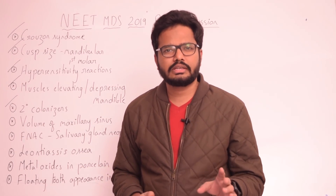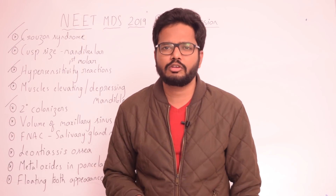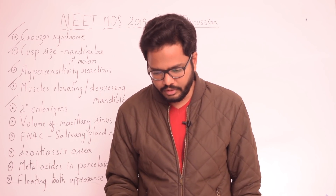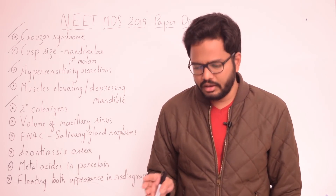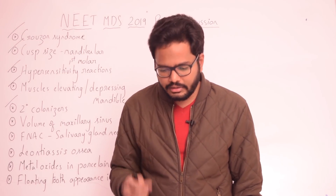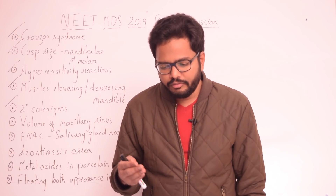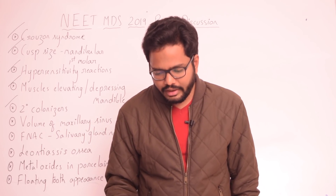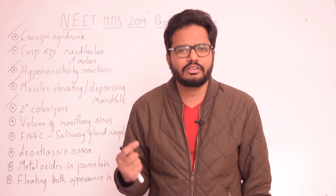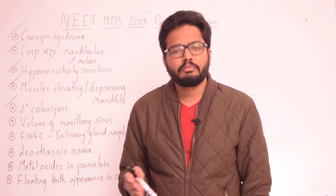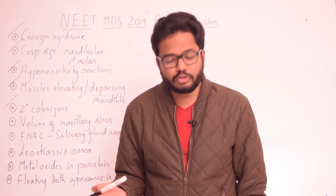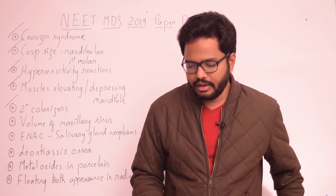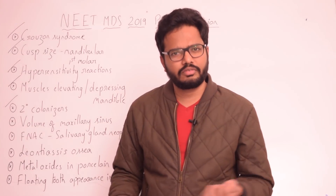Moving on to primary and secondary colonizers in plaque formation. The primary or initial bacteria which colonize include gram-positive facultative microorganisms such as Actinomyces viscosus and Streptococcus sanguis. Secondary colonization and plaque maturation involve microorganisms like Prevotella intermedia, Prevotella nigrescens, Capnocytophaga species, Fusobacterium nucleatum, and Porphyromonas gingivalis — all of which are secondary colonizers.